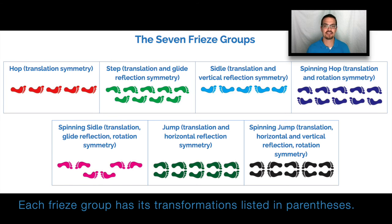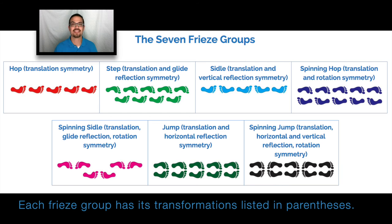It turns out that there are seven different unique freeze groups, as shown in the following: there's hop, step, sidle, spinning hop, spinning sidle, jump, and spinning jump.